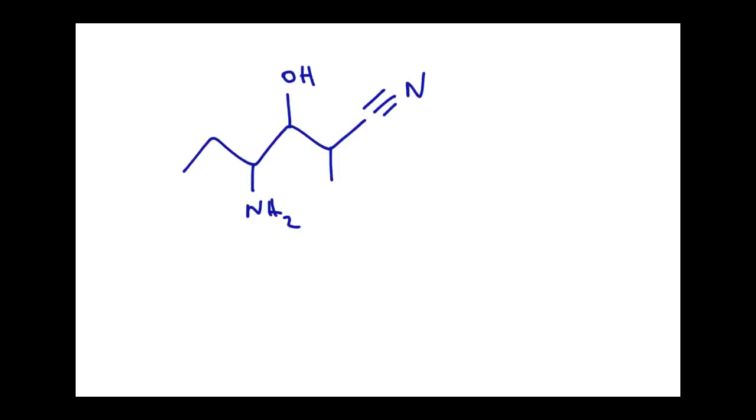If I look at the following molecule, again, the nitrile is the highest priority over the alcohol or the amine and the carbon of the nitrile itself becomes the number one carbon. So there's one, two, three, four, five, six. So this is a hexane nitrile.